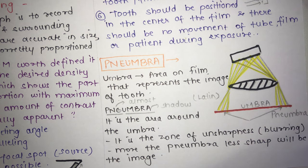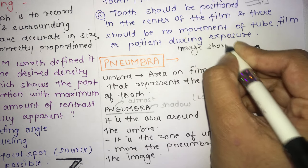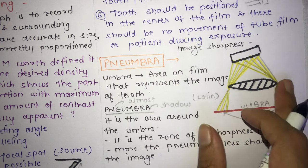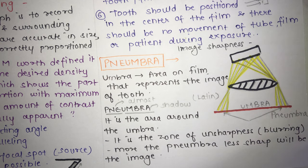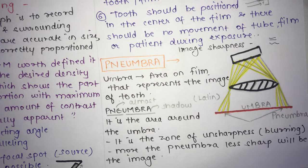Projection geometry is described under the headings of image sharpness and image resolution. Image sharpness is defined as how well a boundary between two differing radio densities is delineated. Image resolution is the degree to which a radiograph records separate objects that are close together — for example, how well enamel and dentine are recorded as two distinct structures.